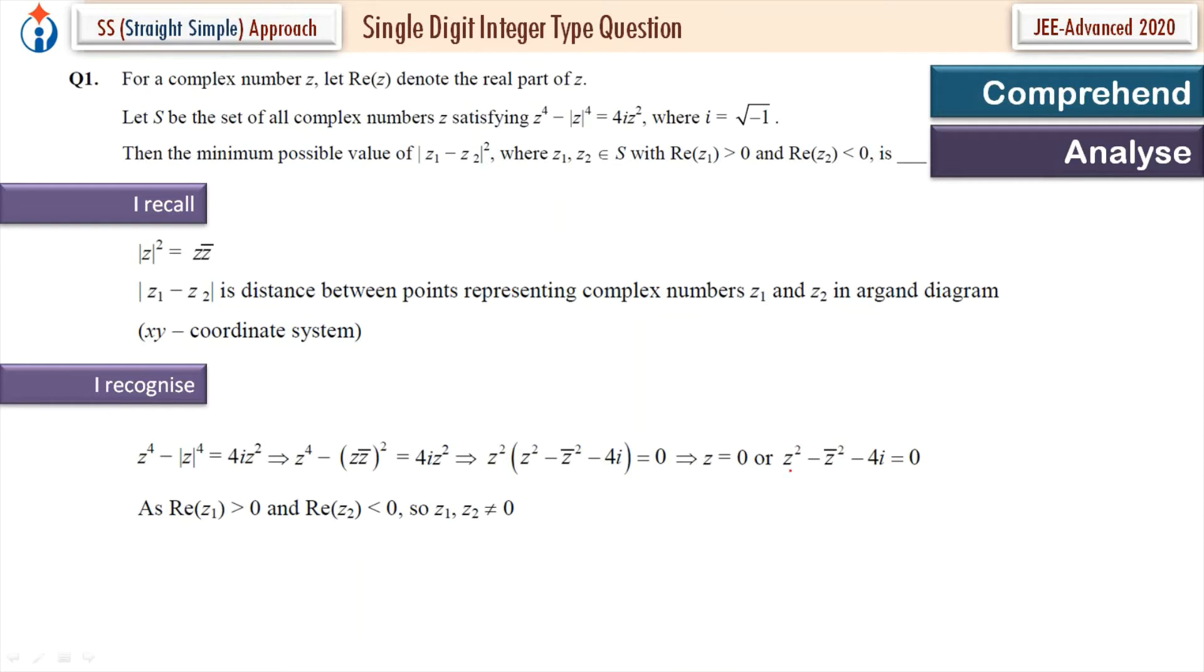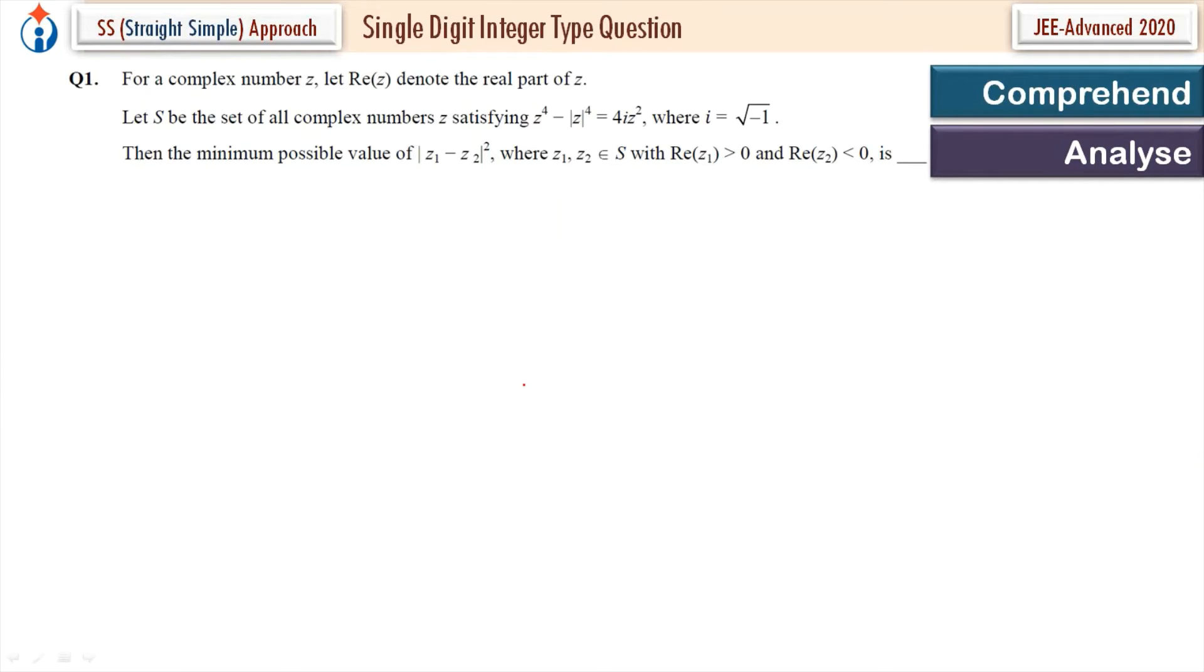So this is the equation as real part of Z1 is greater than 0 and real part of Z2 is less than 0. This is given, so Z1, Z2 cannot be 0. So I recognize that. Now let's execute. Let's calculate.